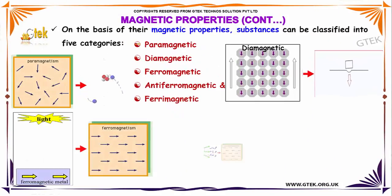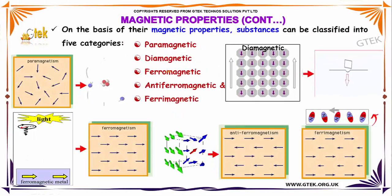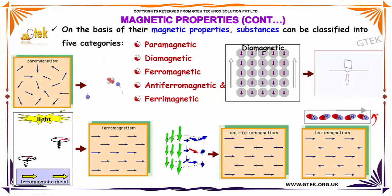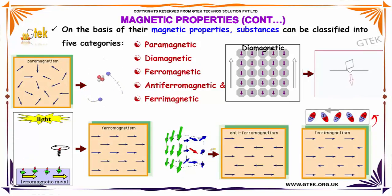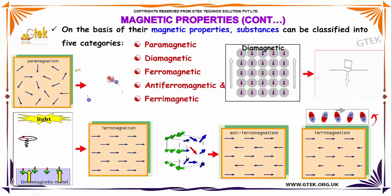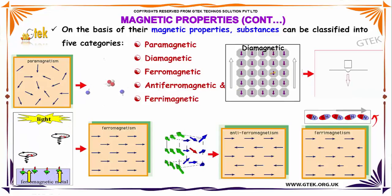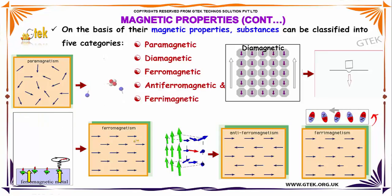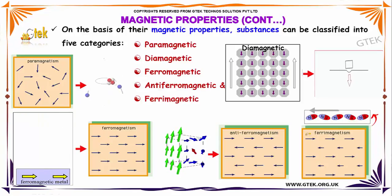On the basis of their magnetic properties, a substance can be classified into five categories: paramagnetic, diamagnetic, ferromagnetic, antiferromagnetic, and ferrimagnetic.